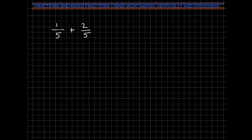Adding fractions: if you notice that the denominators are both the same — in this case the number 5 — you could go ahead and add straight across. So our answer here is 3 fifths.